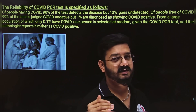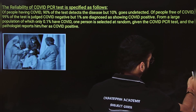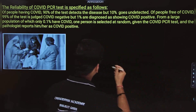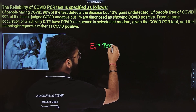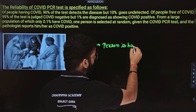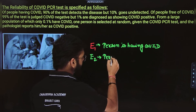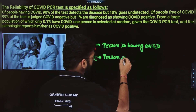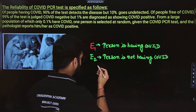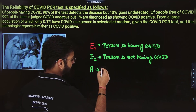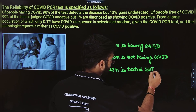We have to first understand how to define the events. So I am defining the events. Event E1 is: the person is having COVID. Second is E2, which means the person is not having COVID. And the last event which I am writing is A: that the person is tested COVID positive.